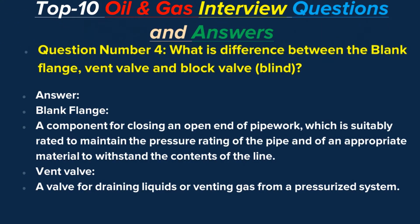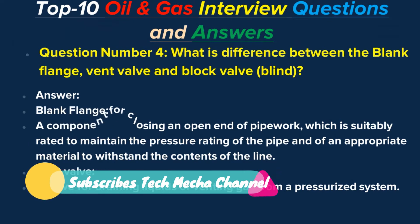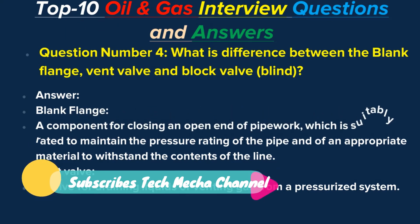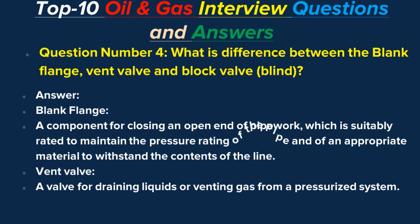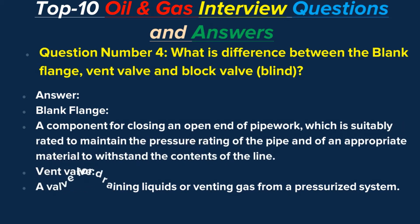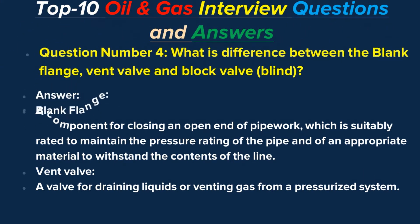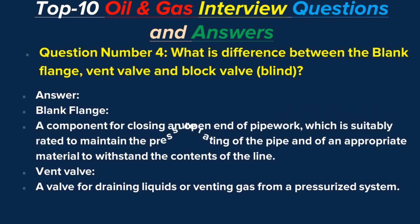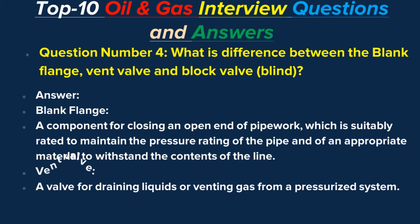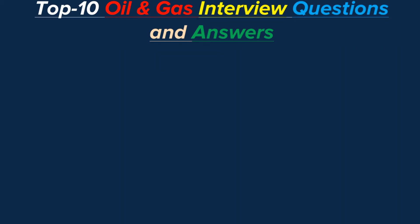Question number four: What is the difference between a blank flange, vent valve, and block valve? Answer: A blank flange is a component for closing an open end of pipework, which is suitably rated to maintain the pressure rating of the pipe and of an appropriate material to withstand the contents of the line. A vent valve is a valve for draining liquids or venting gas from a pressurized system. A block valve is a valve which provides a tight shutoff for isolation.